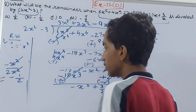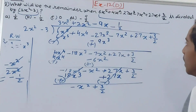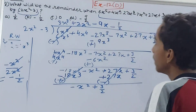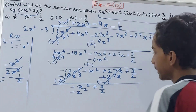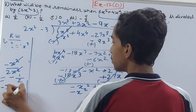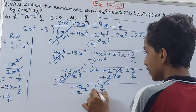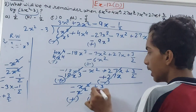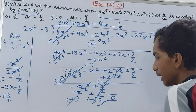So we write minus 1/2 as the next term of the quotient. Multiply minus 1/2 into 2x squared: the 2s cancel, leaving minus x squared. Then minus 1/2 multiplied by minus 3 gives plus 3/2. Change the signs: minus x squared cancels, and plus 3/2 minus 3/2 also cancels. So we are left with 0.